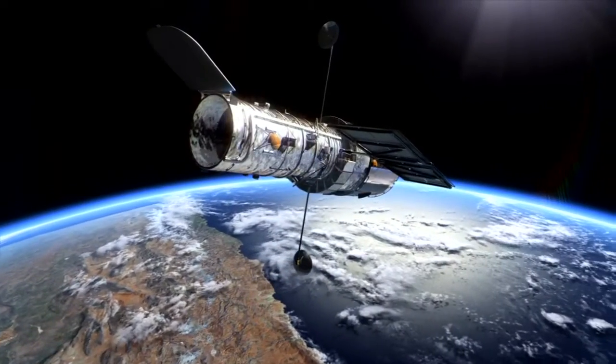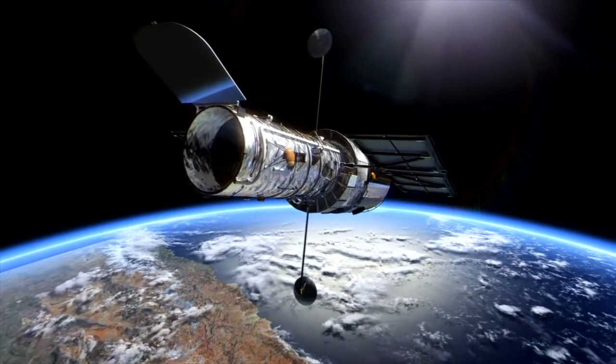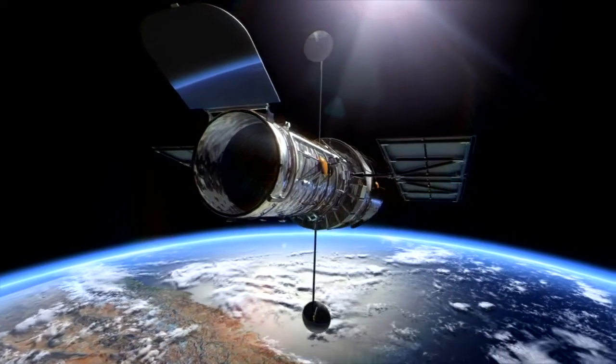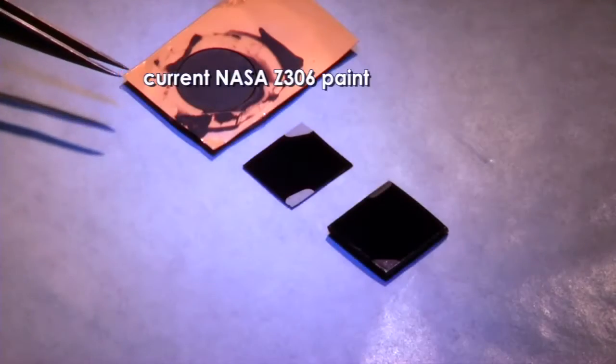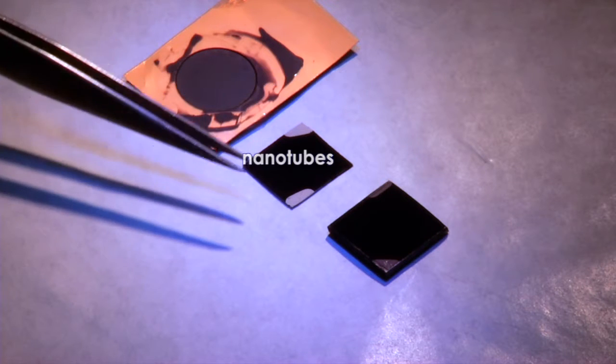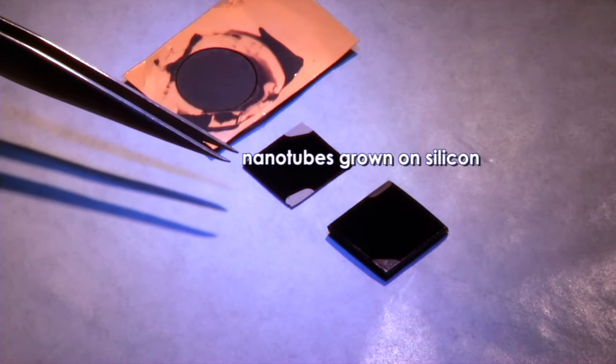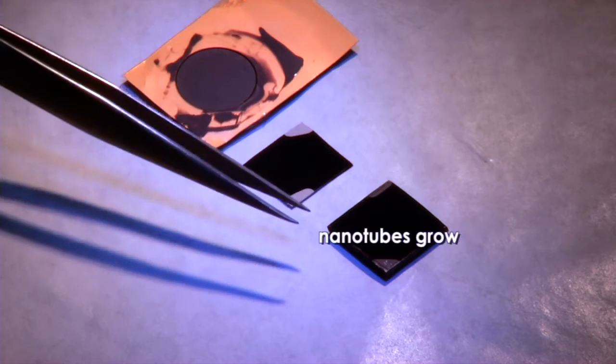So one example where carbon nanotubes can enhance the performance of a scientific instrument in space is through their ability to absorb light. The Z306 paint is the blackest thing that we put on instruments right now. The fact that we're blacker than that makes us blacker than black in terms of performance.